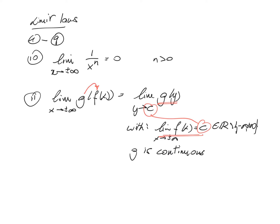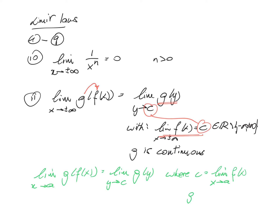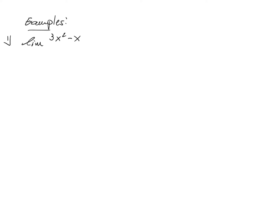This property holds also in general: if we have a limit of g of f of x but x goes to any number a, then you calculate it as the limit of g of y, y going to c, where c is the limit of f of x as x goes to a, and g must be continuous. These properties will be of importance for rational functions, so for functions which are a division of two polynomials — for example, 3x squared minus x plus 2 divided by 5x squared plus x plus 7, and we take the limit for x going to plus infinity.